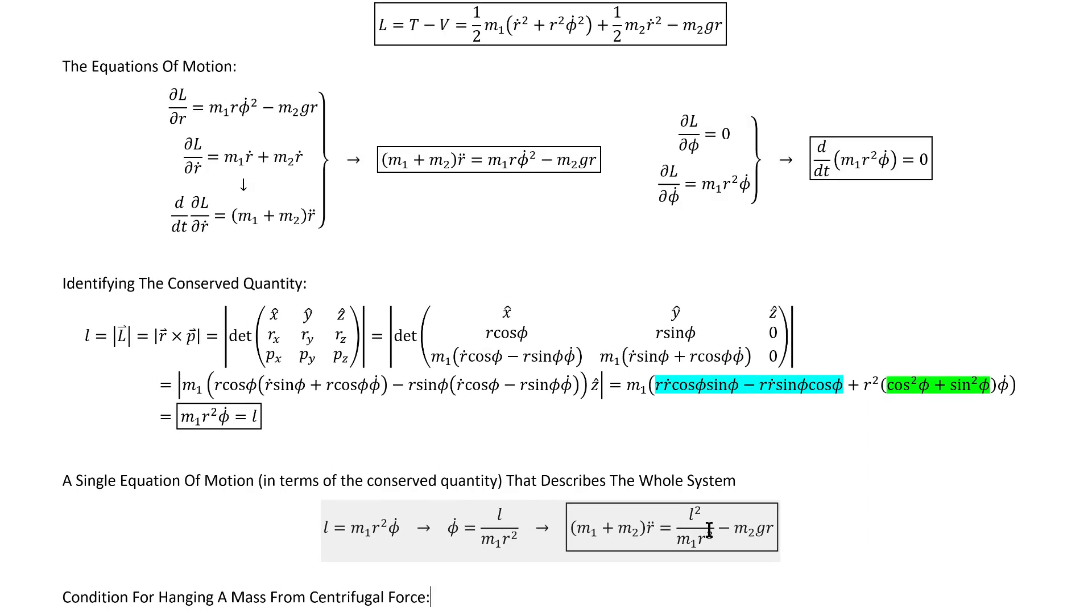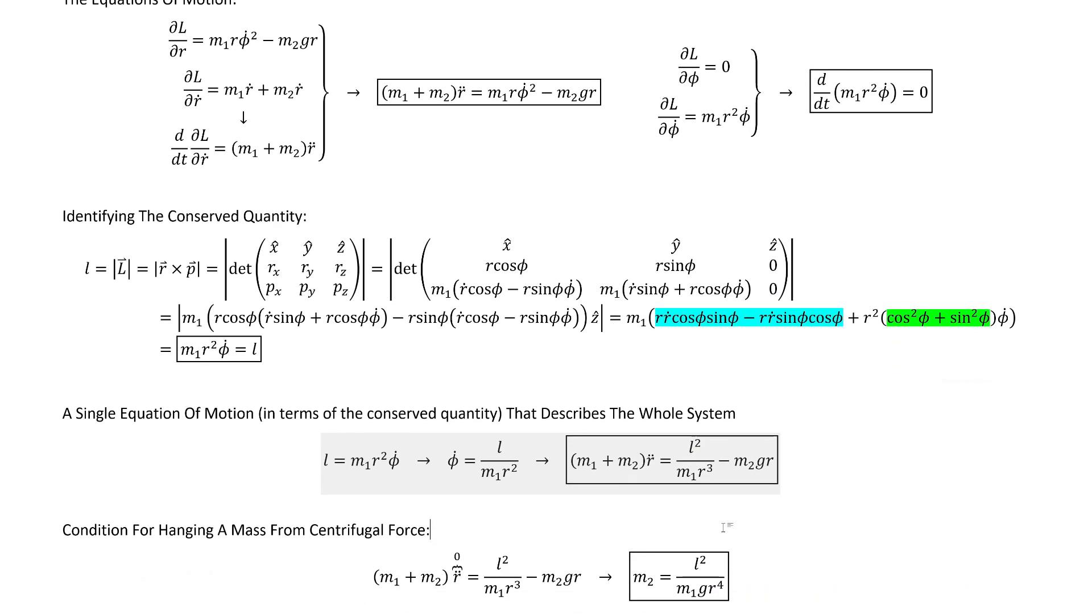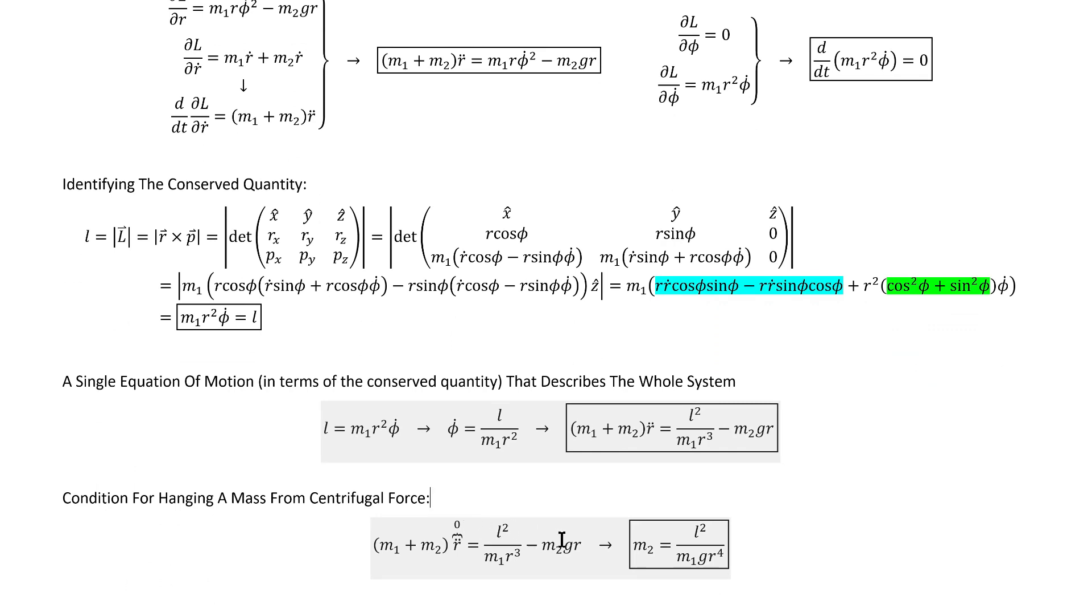With that in mind, we can figure out exactly what m2 has to be for it to be held stationary by the centrifugal force. Setting that acceleration equal to zero, as we were talking about in solving for m2, we find that if m2 equals this combination of the other quantities in the problem, we'll have a static situation.